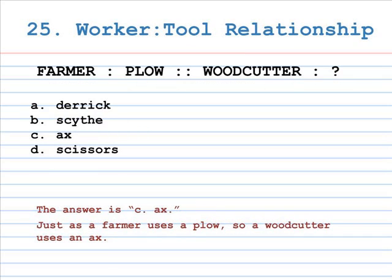Number 25: worker is to tool relationship. Farmer is to plow, as woodcutter is to A. Derrick, B. Scythe, C. Axe, D. Scissors. The answer is C, Axe. Just as a farmer uses a plow, so a woodcutter uses an axe. A derrick describes a crane for lifting heavy things, and a scythe is a tool for cutting long grass or grain.